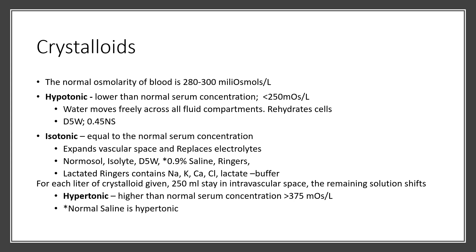The normal osmolarity of blood is 280 to 300 milliosmoles per liter. Hypotonic solutions have less than that concentration — when you give a fluid such as D5W or half normal saline, water can move freely from the vascular compartment into the interstitial and intracellular compartments, actually rehydrating cells. Isotonic is a solution equal to normal serum concentration, used to expand the vascular space and replace electrolytes. Examples include Normosol, Isolyte, D5W, normal saline, and lactated Ringer's.